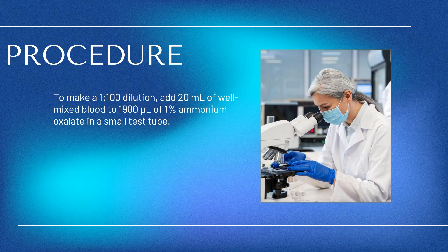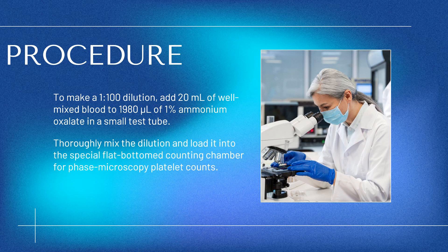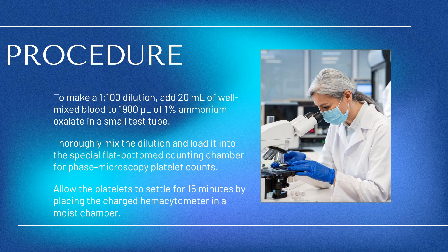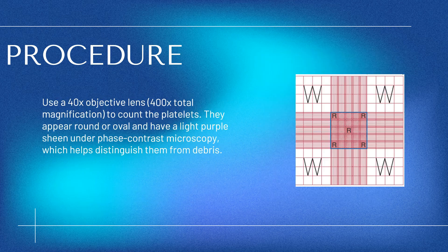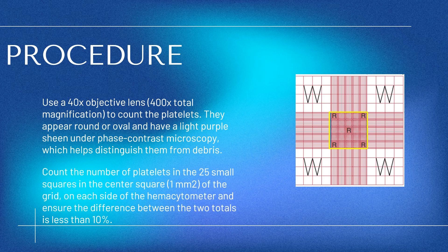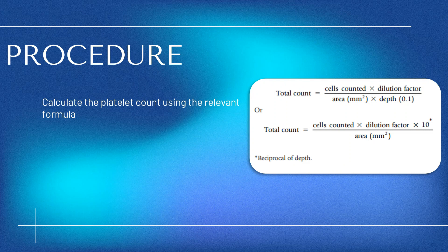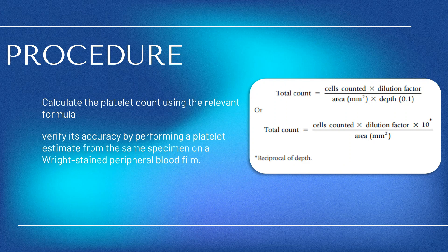Procedure: To make a 1 to 100 dilution, add 20 µL of well-mixed blood to 1980 µL of 1% ammonium oxalate in a small test tube. Thoroughly mix the dilution and load it into the special flat-bottomed counting chamber for phase microscopy platelet counts. Allow the platelets to settle for 15 minutes in a moist chamber. Use a 40x objective lens to count the platelets; they appear round or oval with a light purple sheen under phase contrast microscopy. Count platelets in the 25 small squares in the center square on each side, ensure the difference between the two totals is less than 10%, calculate the platelet count, and verify accuracy with a Wright-stained peripheral blood film.